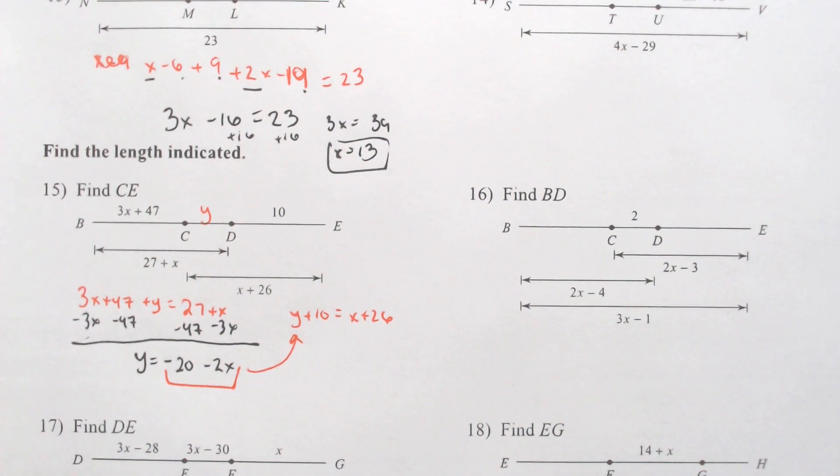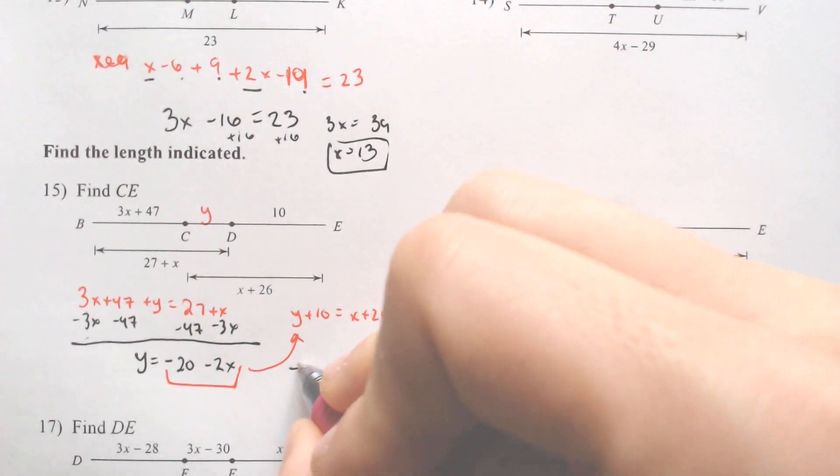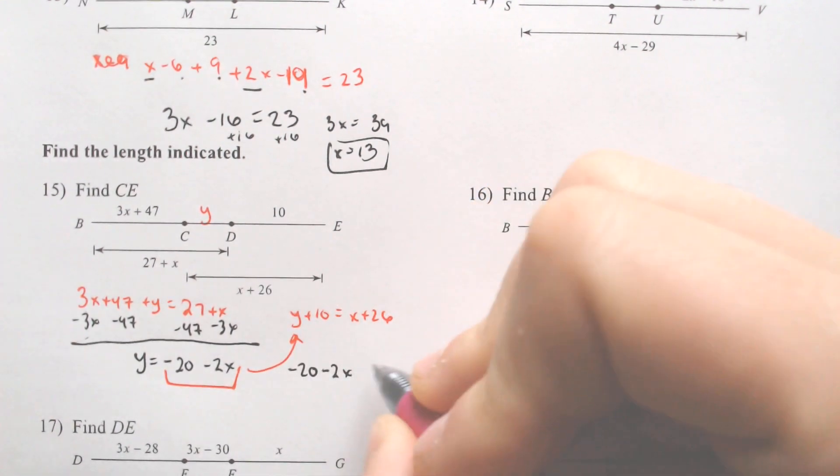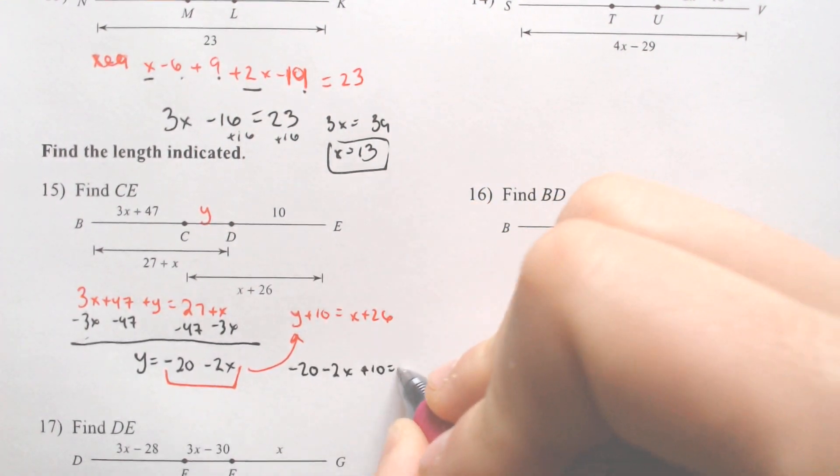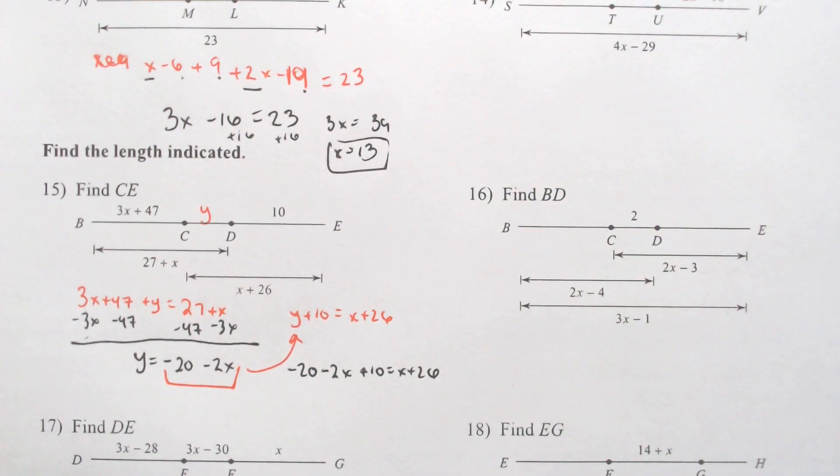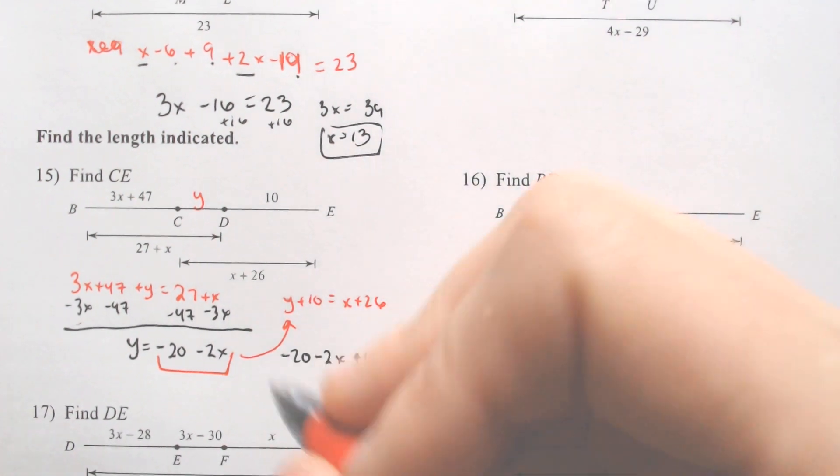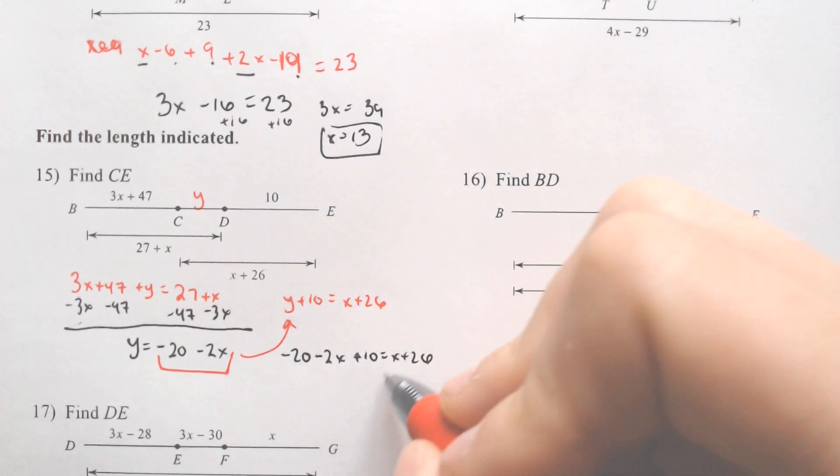This is indeed a much harder problem. Negative 20 minus 2X plus 10 equals X plus 26. Now we're just going to solve for X. We're going to add the 2X over, we're going to combine like terms.